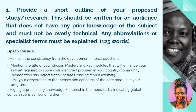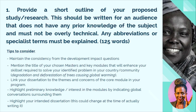Highlight preliminary knowledge or interest in the modules by indicating global conversations surrounding them, then highlight your intended dissertation — this could change at the time of actually writing it, but they want to see that you've thought it through. Pause here and think: what was the problem I identified in my development impact questions? What possible dissertation can I come up with linked to the core module themes? Look at the university website, read the course content and module details completely, and align them to the problem you wrote in your development impact essay.